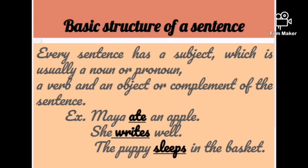In 'Maya ate an apple,' Maya is the subject, ate is the verb, and apple is the object. In 'She writes well,' writes is the verb and well is an adverb — a complement of the sentence. In 'The puppy sleeps in the basket,' the puppy is the subject, sleeps is the verb, and 'in the basket' is the complement.